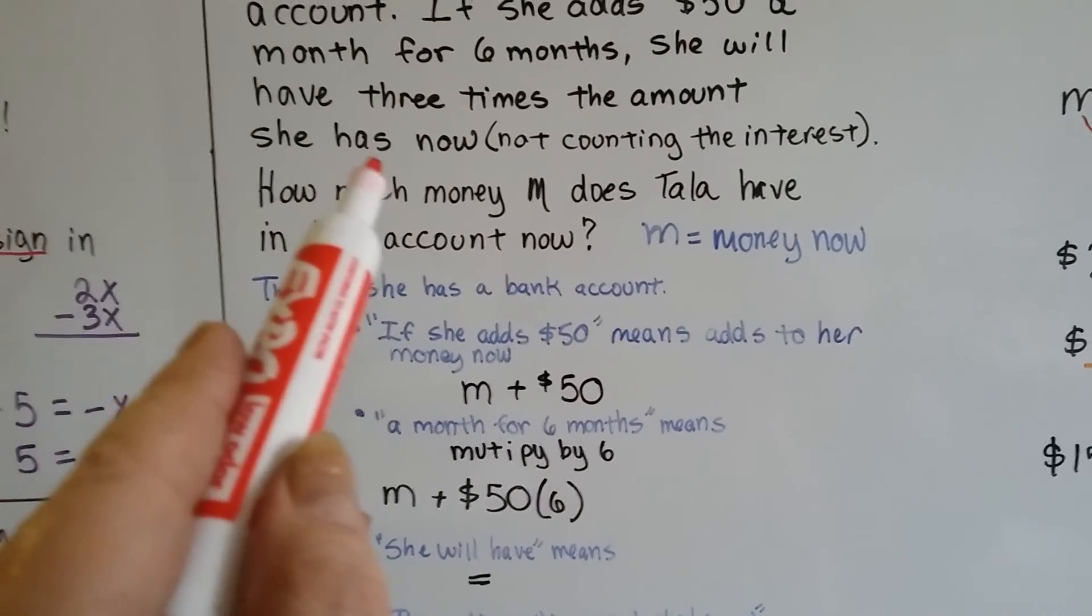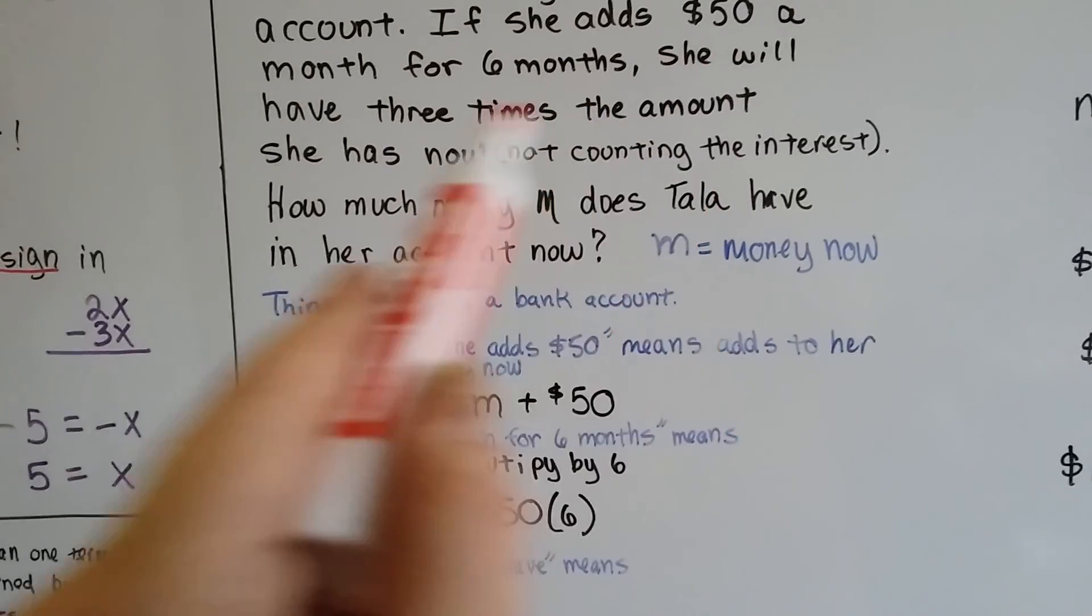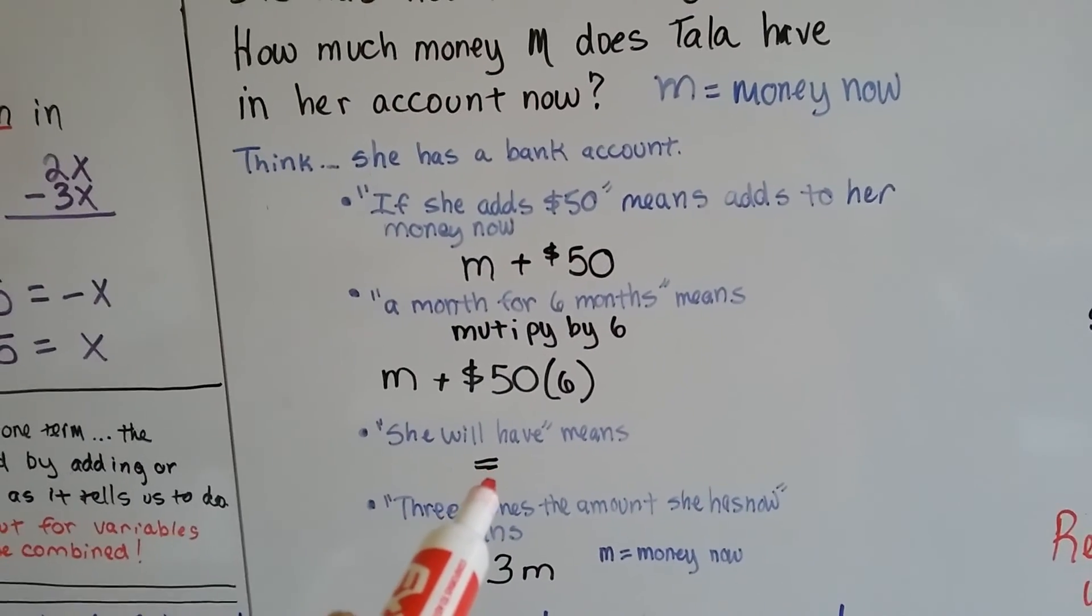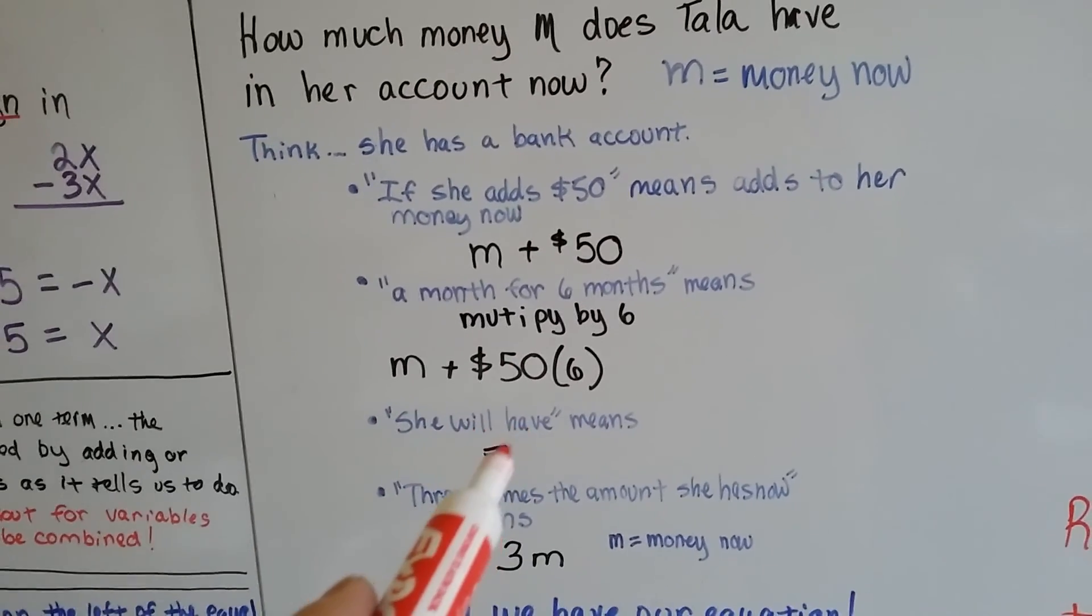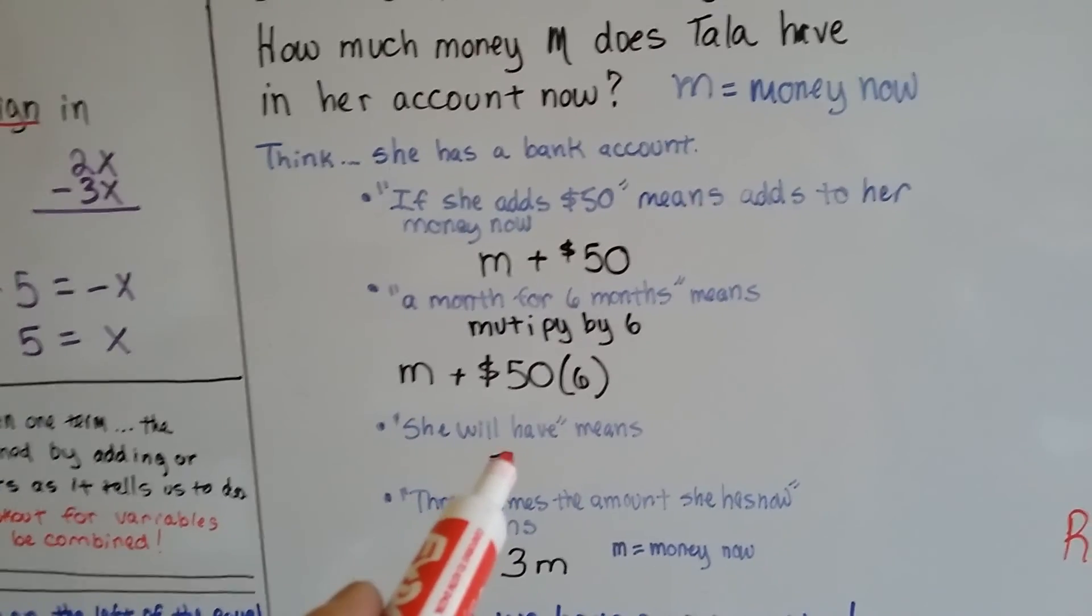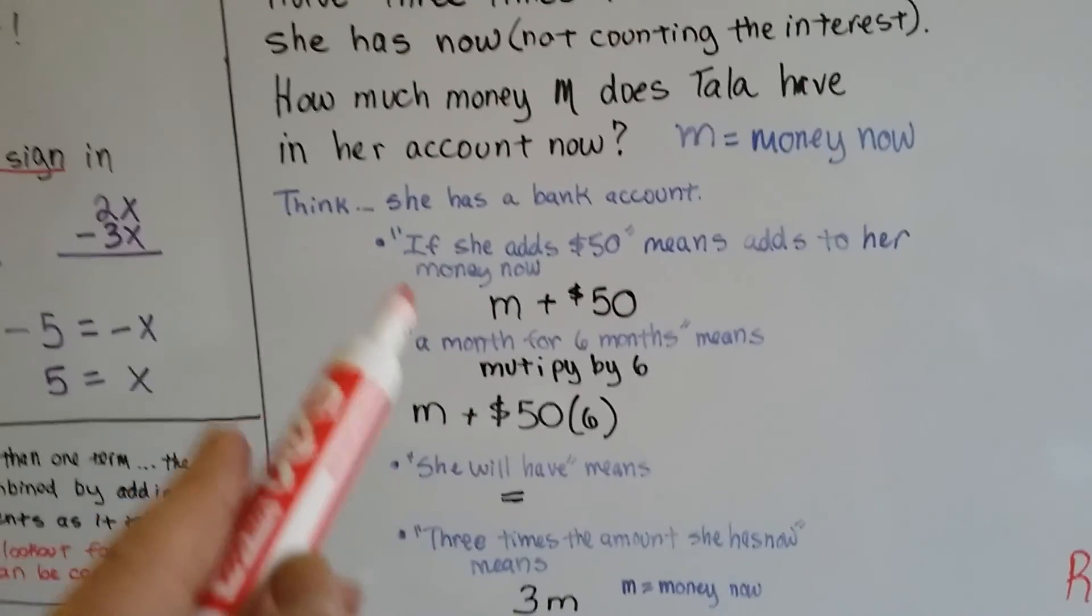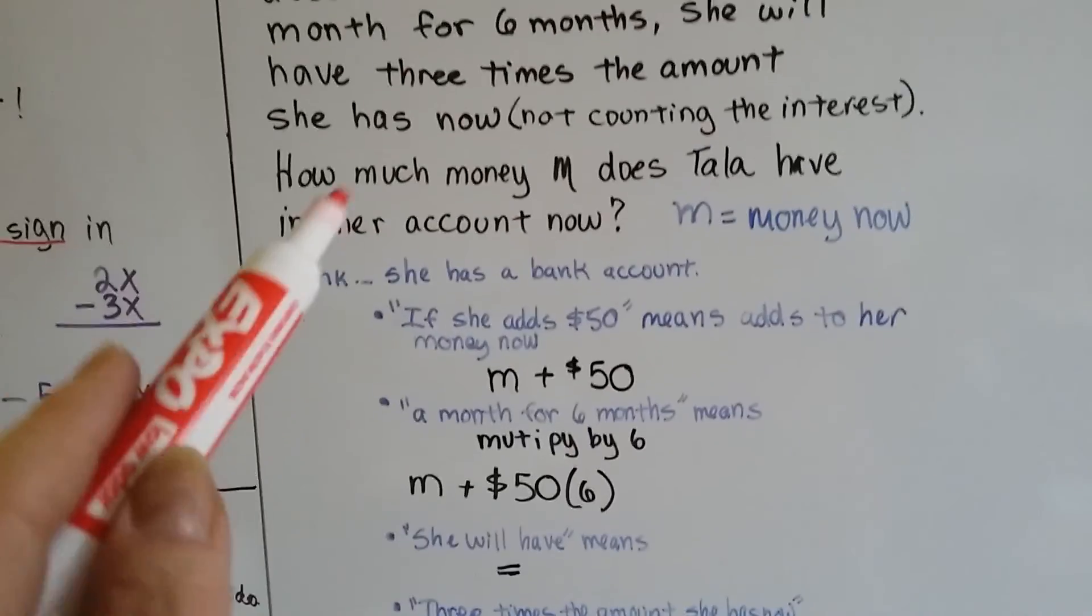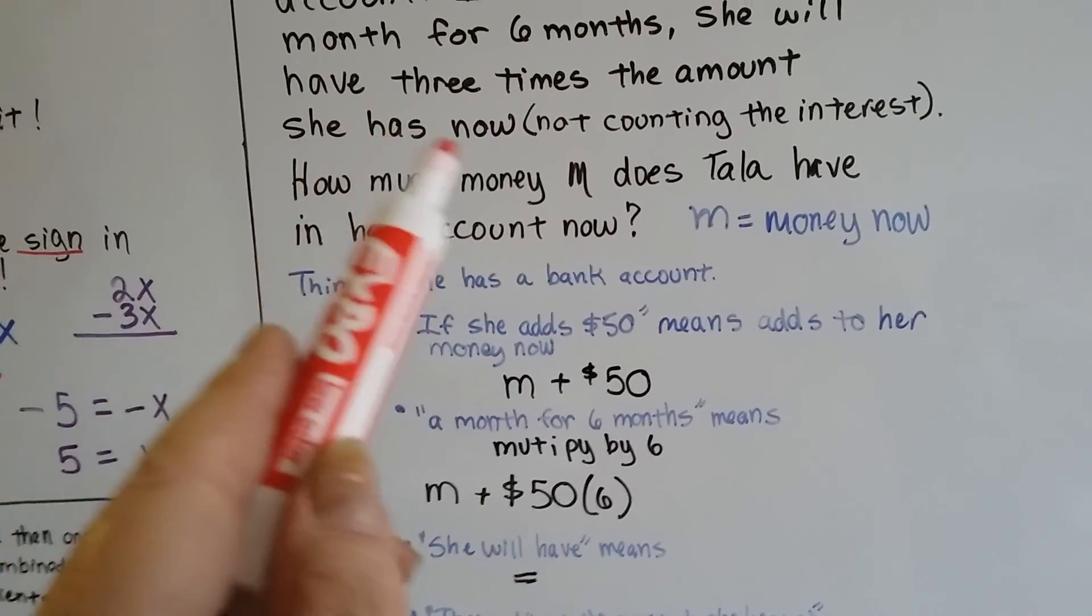And it says, she will have. She will have. Well, that means it's going to equal. That tells us that whatever we're doing here is going to equal in the end. That's how much she'll have, the total. And it's not counting the interest.